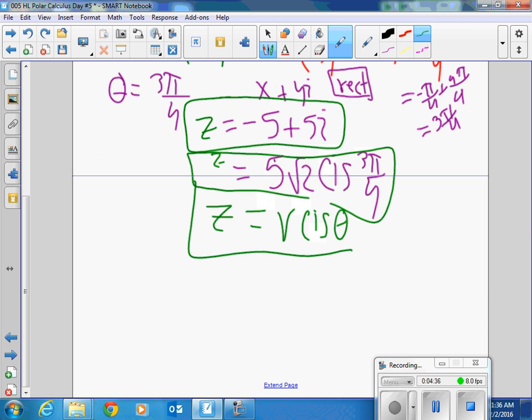Yeah, yeah. This is a shortcut. So whenever you see r cis theta, it's saying r times the cosine of theta plus i times the sine of theta. It's a shortcut. Oh, great question.